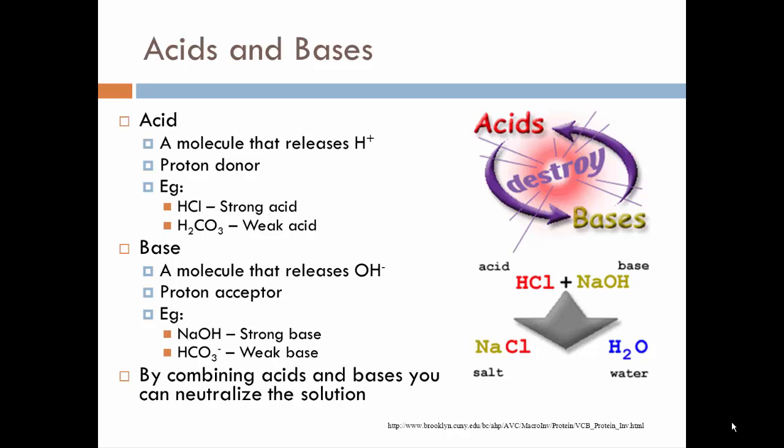An anion, remember, is a negative ion. So hydrochloric acid is a good example of a strong acid because it completely dissociates into hydrogen ions and chlorine ions. And those hydrogen ions then are the protons that the hydrochloric acid is donating to the solution.